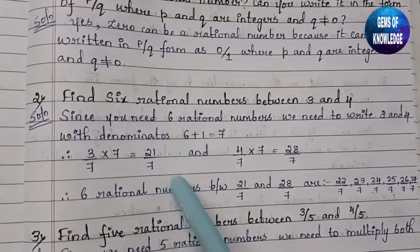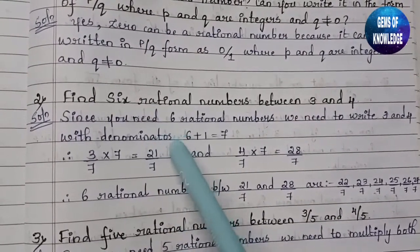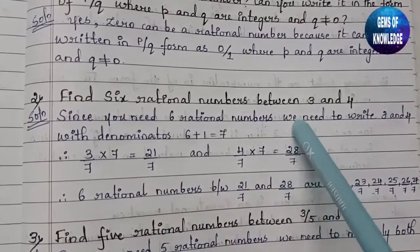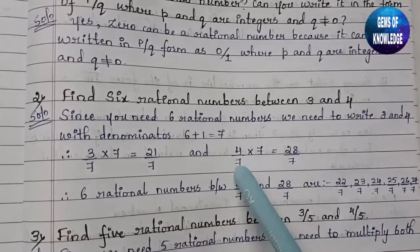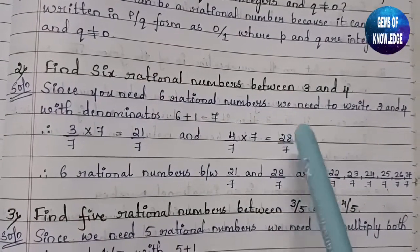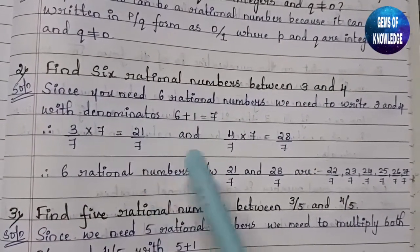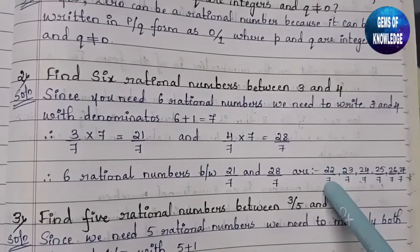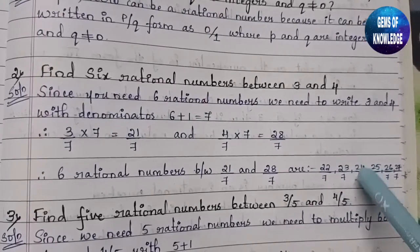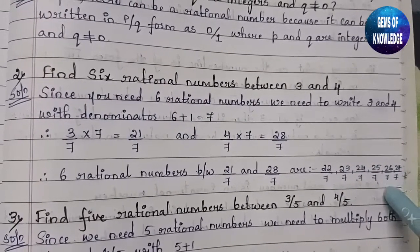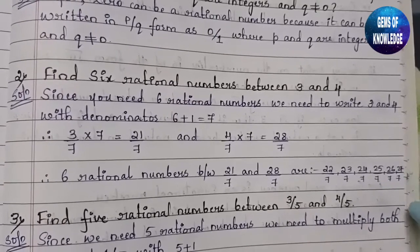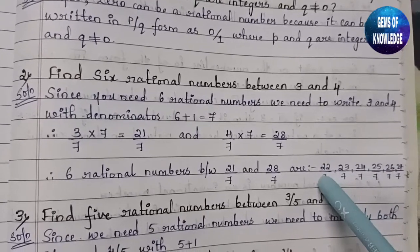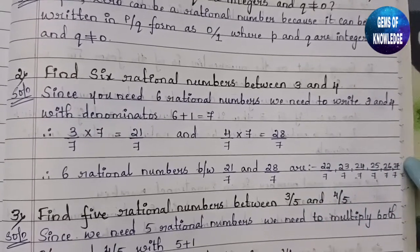Seven ones are 7, seven threes are 21 — giving back 3; seven fours are 28 — giving back 4. So between 21/7 and 28/7, the six rational numbers are: 22/7, 23/7, 24/7, 25/7, 26/7, and 27/7. That gives us exactly six rational numbers between 3 and 4.